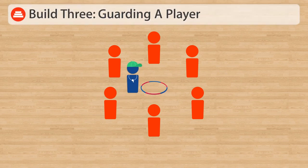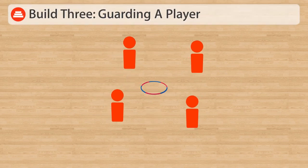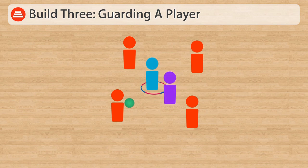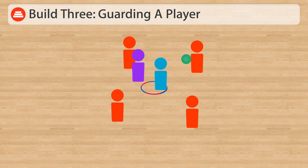In Build 3, the teacher will add a hoop in the middle of the circle. One student will stand in the hoop and be the target player. Another player will be selected to play defense. The players must now pass the ball around the circle, attempting to make a pass to the target player. If that pass is completed, then the players switch roles.